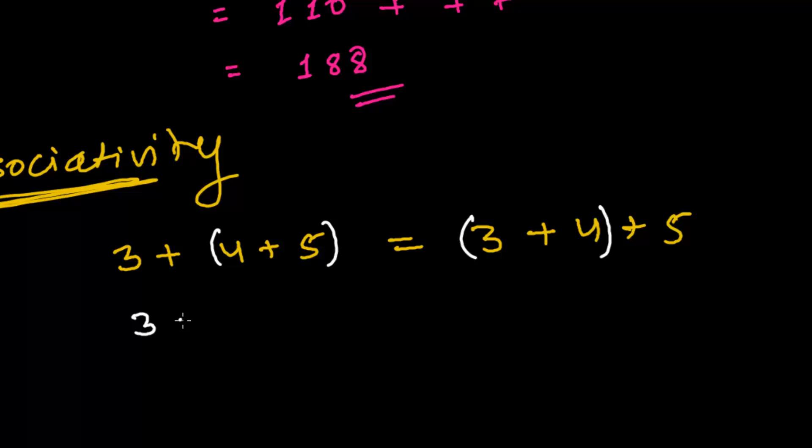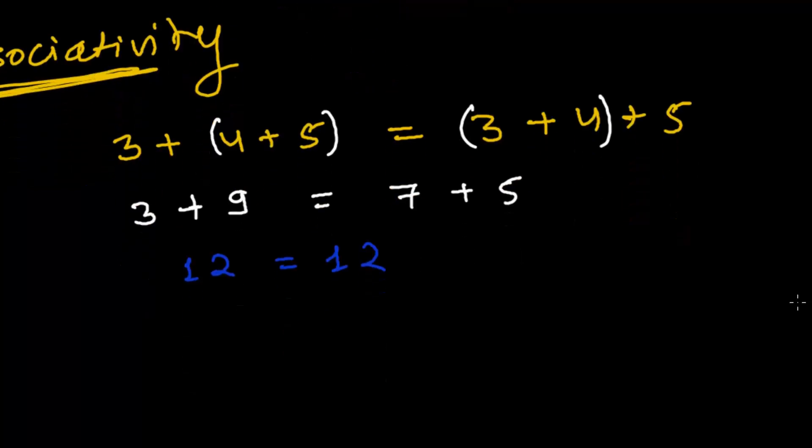Let's take a look. So it is 3 and 4 plus 5 is 9. Same here. 3 plus 4 is 7 and this 5 is as it is. Now, 3 plus 9, that is 12. And 7 plus 5 is 12. Ooh, voila! It's not changing. This is what is associativity.